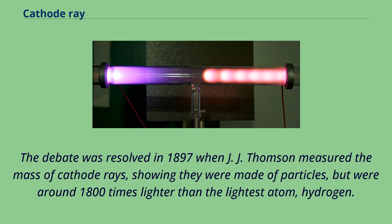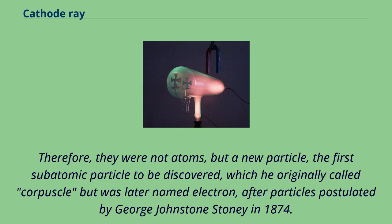The debate was resolved in 1897 when J.J. Thompson measured the mass of cathode rays, showing they were made of particles, but were around 1800 times lighter than the lightest atom, hydrogen. Therefore, they were not atoms, but a new particle, the first subatomic particle to be discovered, which he originally called corpuscle but was later named electron, after particles postulated by George Johnston Stoney in 1874.